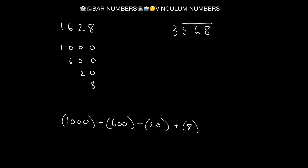This is kind of like saying that we start with 1,000, we add 600, then we add 20, then we add 8. So we have 1,000 plus 600 plus 20 plus 8.